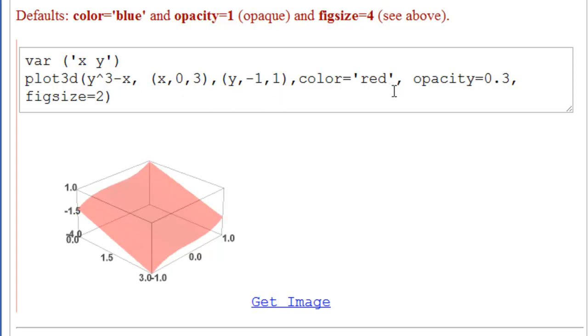Color equal to red as we had once before. And now opacity is between zero and one. We have opacity equal to zero point three, comma. This continues. I mean I haven't hit enter here. And our figure size equal to. And we can see that it is indeed transparent. It is smaller. That's the figure size. And it's red.